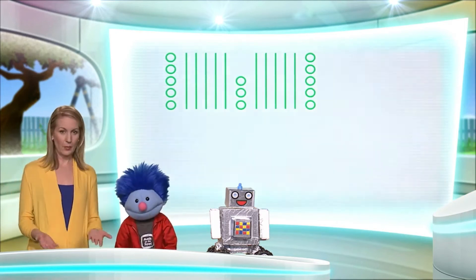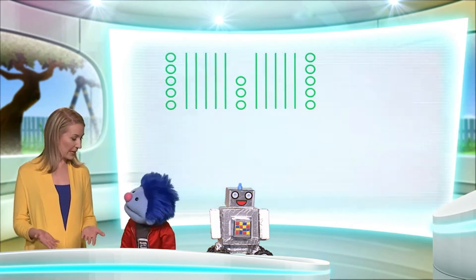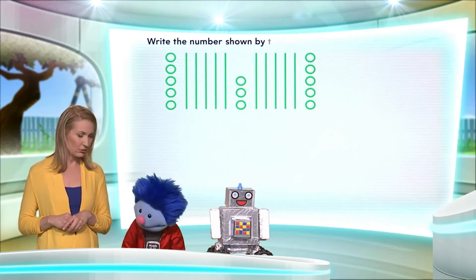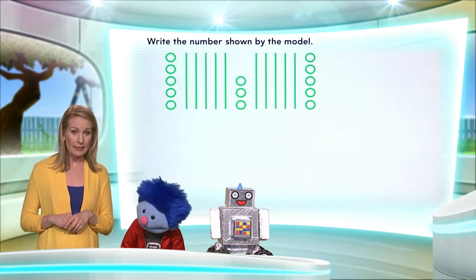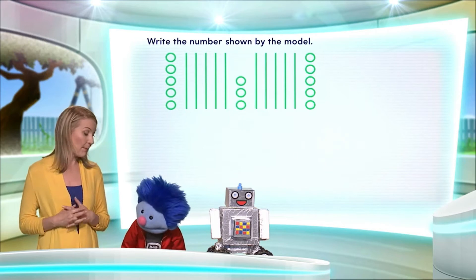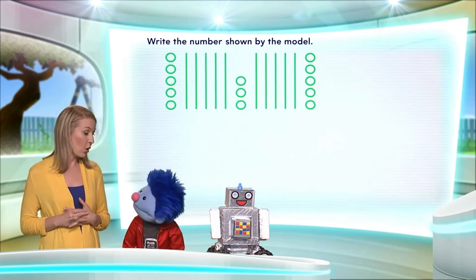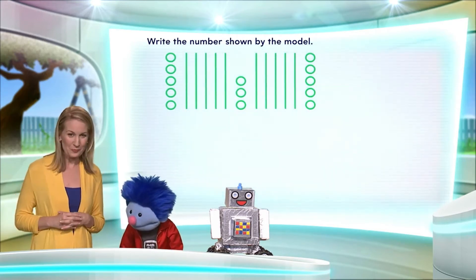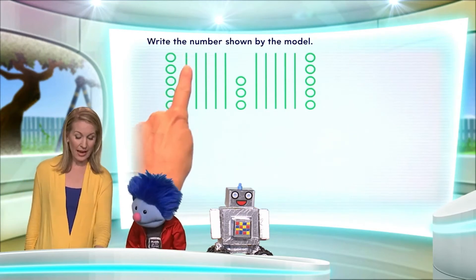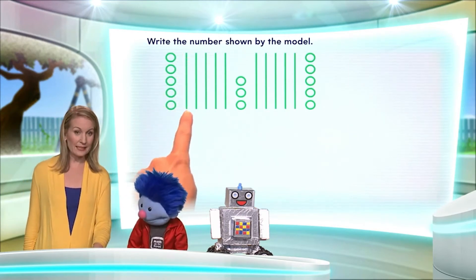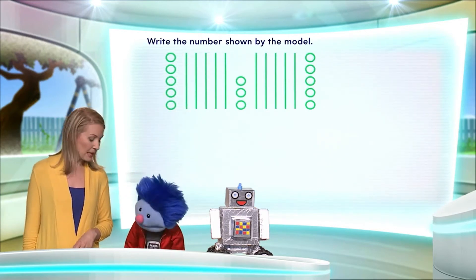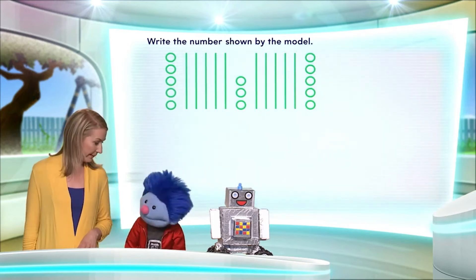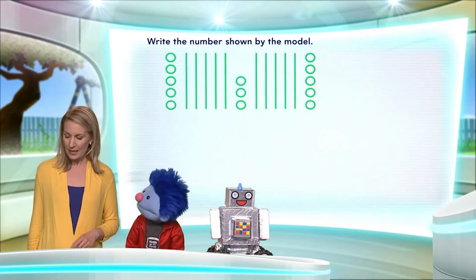All right, here we go. Shall we begin? Let's do it. Do you see this? There are a bunch of lines and circles here. This is modeling a number that we don't know what it is yet, but we're going to find out very soon. Each line represents 10, and each circle represents one.